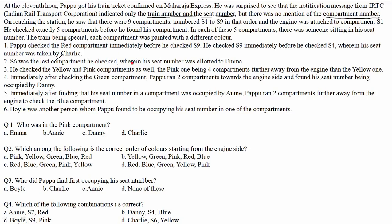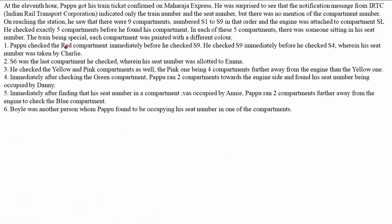Six different conditions are also given to us. The first condition tells us that he checked the red compartment immediately before he checked S9. The second condition tells us he checked the red compartment immediately before S4 — so we form a triplet: red, then S9, then S4. It is also mentioned that in S4, the seat number was taken by Charlie.